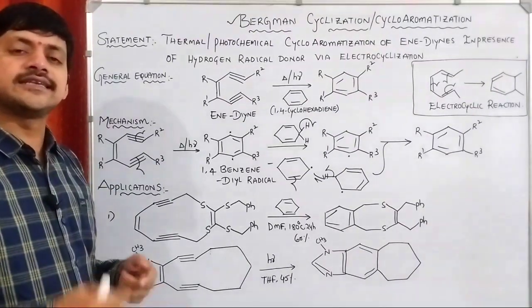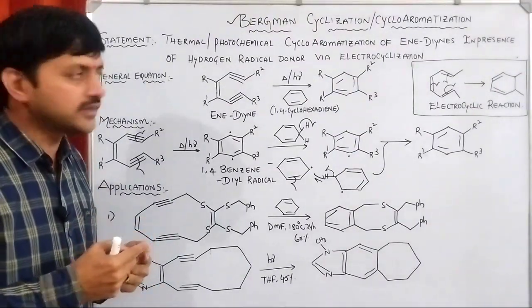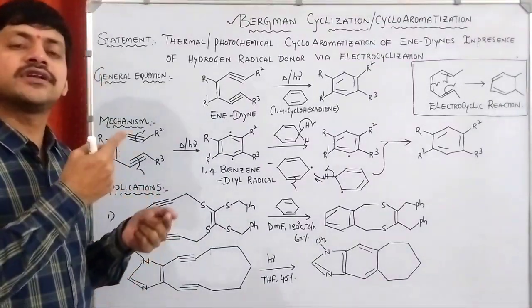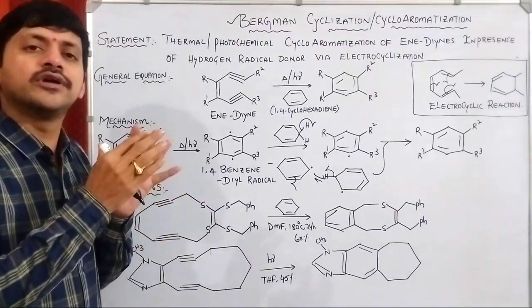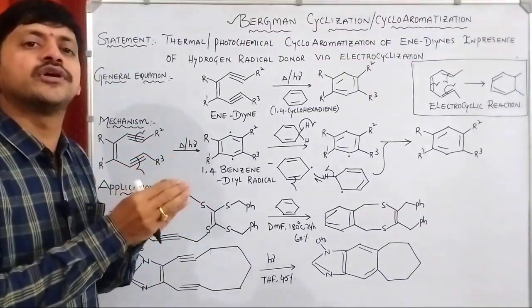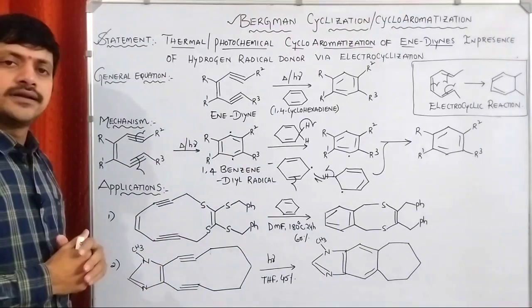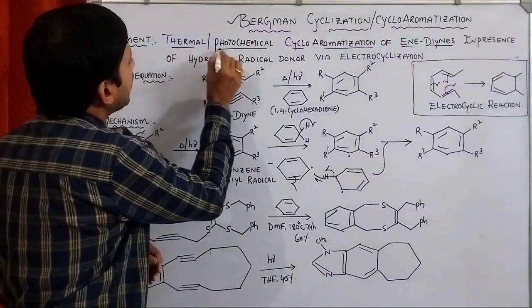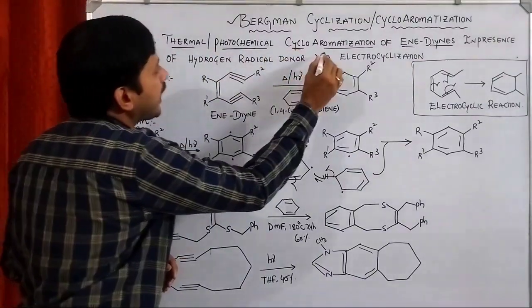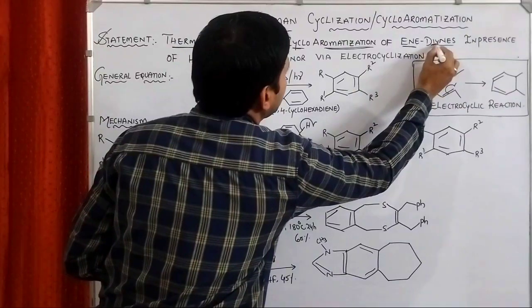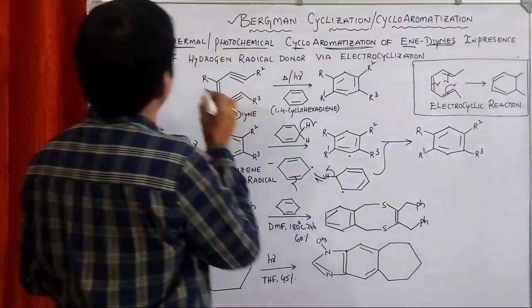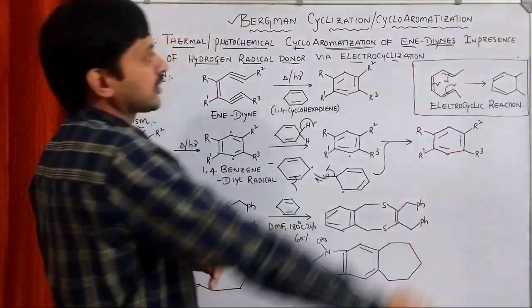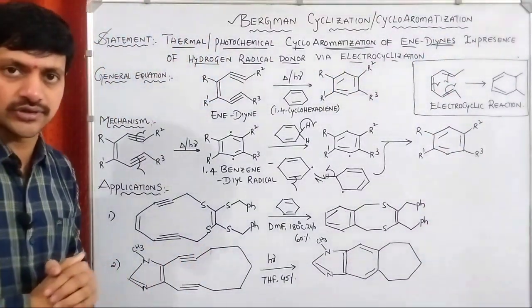The name itself indicates it is a cyclization reaction and cycloaromatization, meaning that after the completion of this particular reaction, we are going to get a product that is aromatic in nature. In the statement, thermal or photochemical cycloaromatization of ene-diynes in presence of a hydrogen radical donor via electrocyclization is commonly called Bergman cyclization.